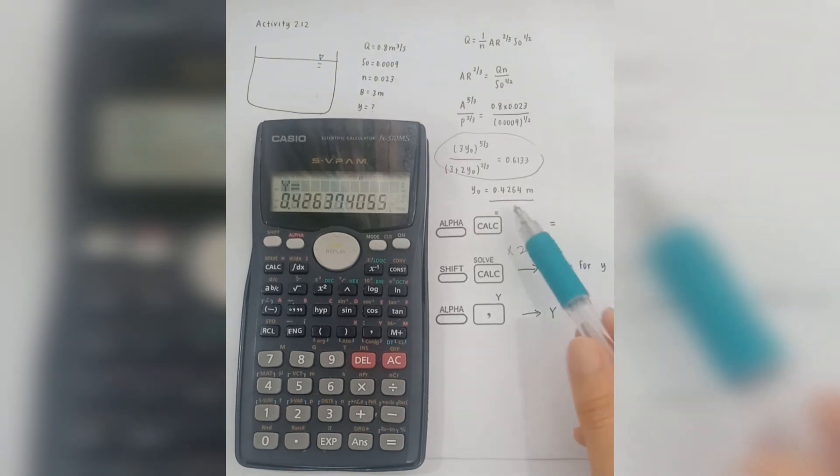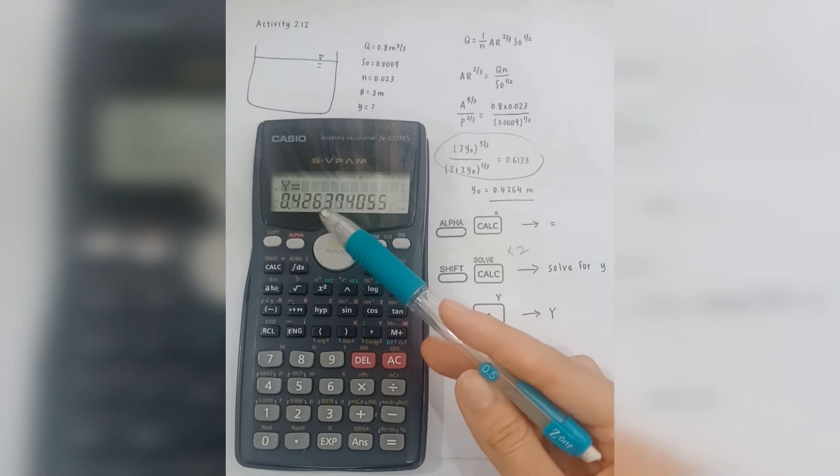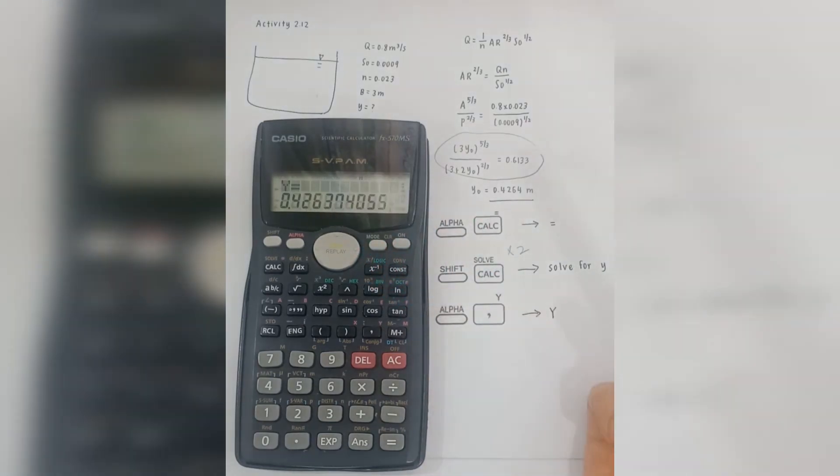Okay. The final answer, we want to take 4 significant numbers, which is 0.4264 meters. That's all from our group. Thank you.